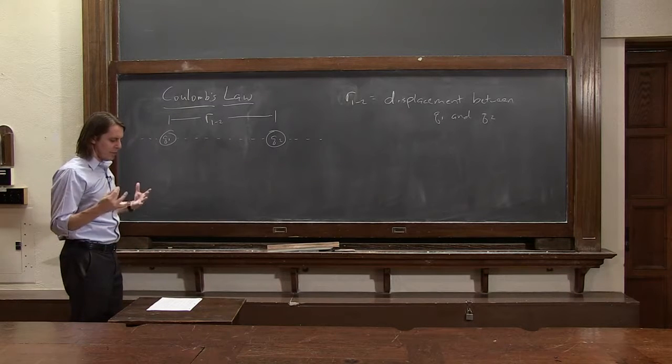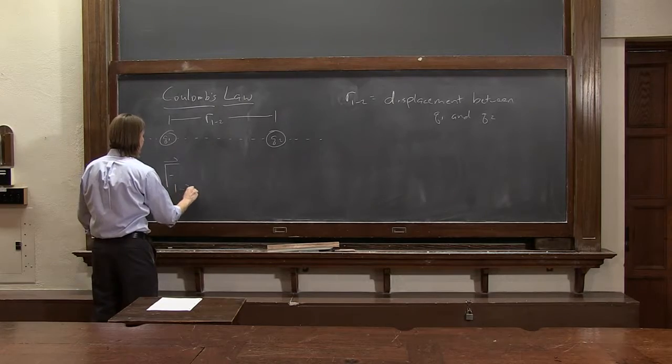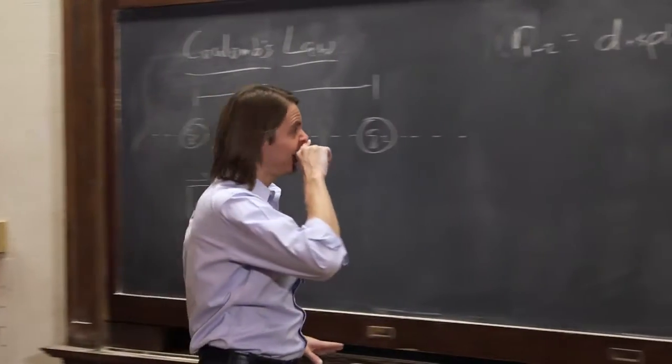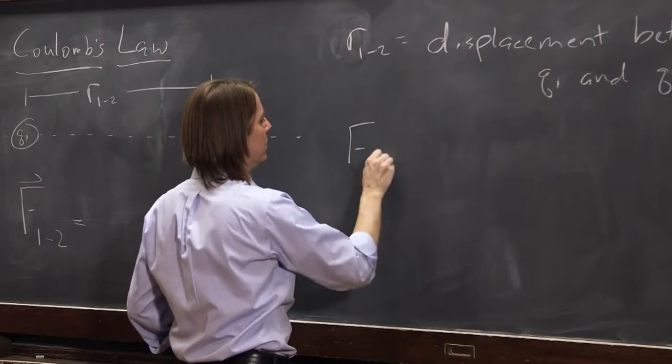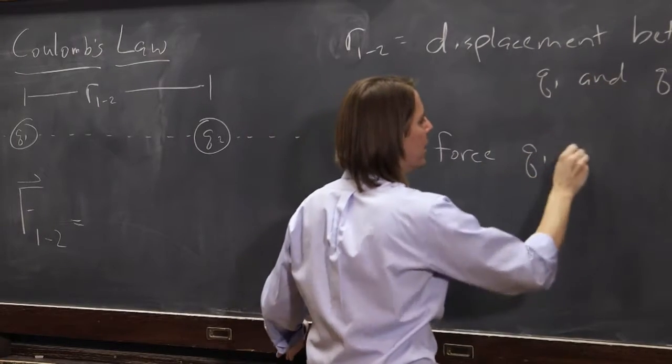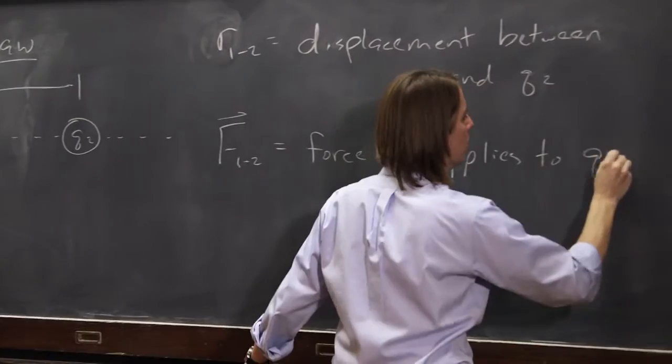So the actual force that we want to calculate with Coulomb's Law is F1,2. So F1,2, let's be clear what that means. F1,2 is the force Q1 applies to Q2.